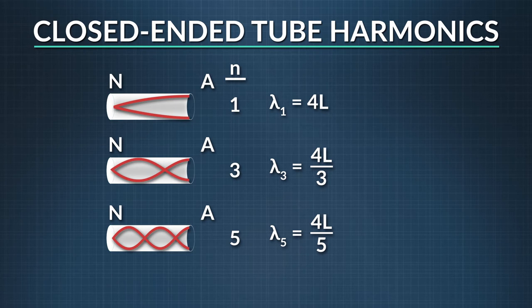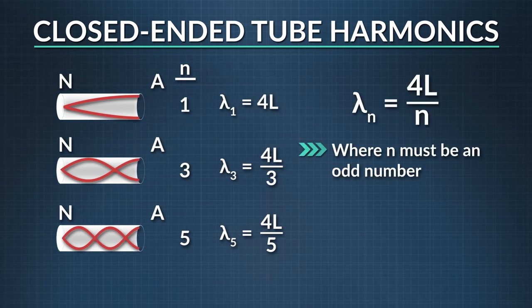Those odd numbers are significant, because you can see that the harmonics only occur when you have an odd number of fourths of a wavelength. They are called odd fourths.